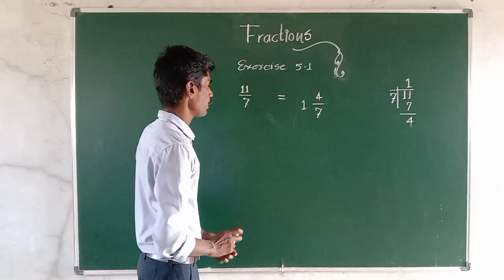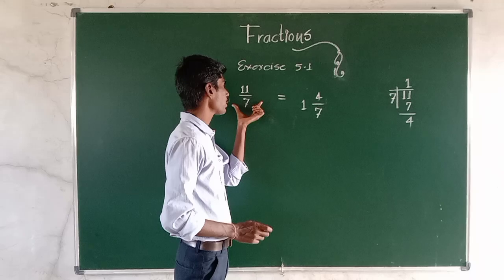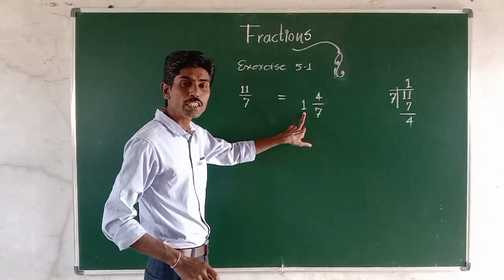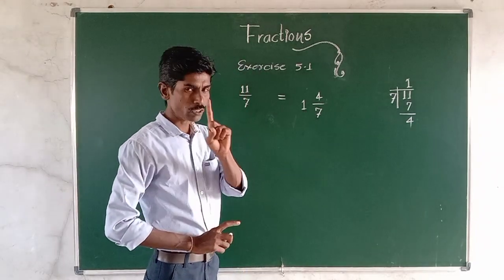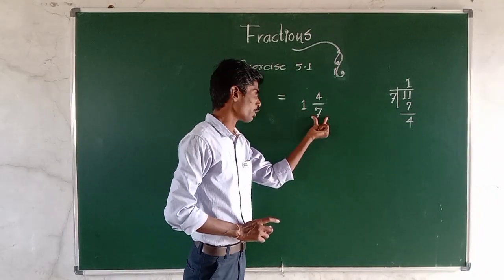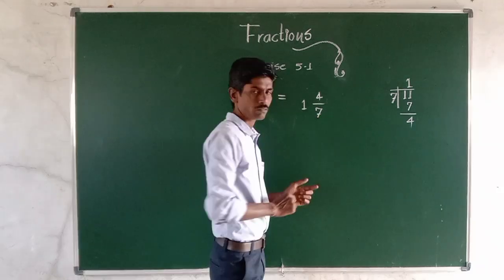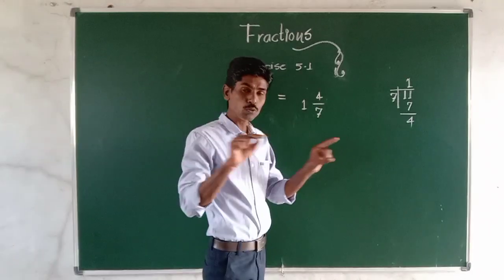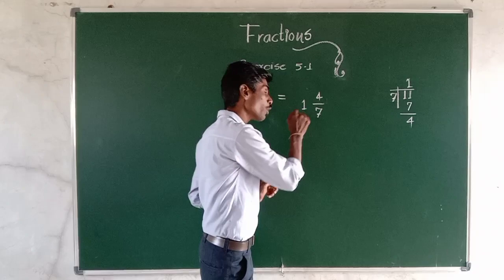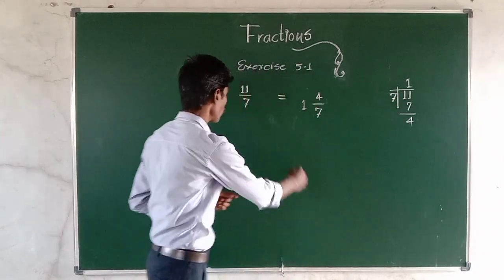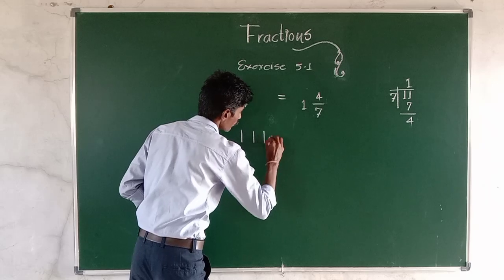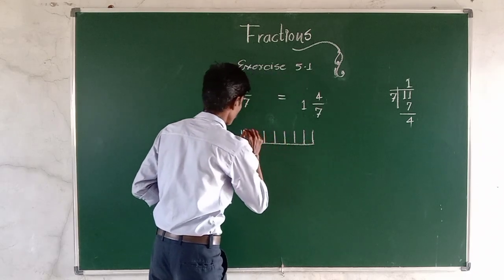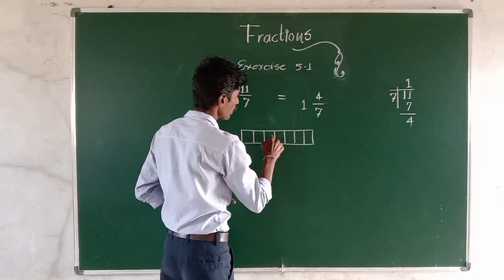So how to draw this diagram for 11 by 7? The denominator is 7, so there is a set of 7 boxes. One set because 1 is the whole number. That's why we draw 7 boxes — 7 boxes because 7 is the denominator, or you can say the divisor. How many times? That is 1 time because of the quotient. So we draw 1, 2, 3, 4, 5, 6, 7.